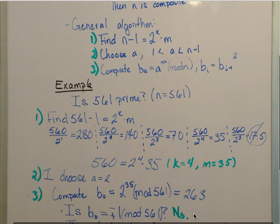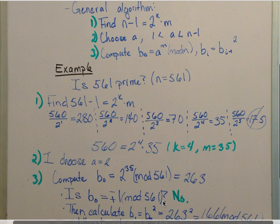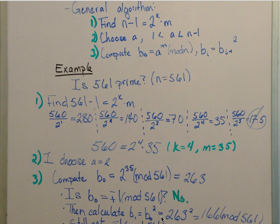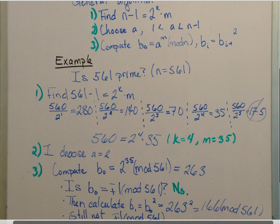I want to calculate b1, which is equal to b0, the previous b, squared. So basically, we take the number that we just got, square it, and then mod it 561. So we find that that equals 166 mod 561, which is still not equal to plus or minus 1 mod 561.